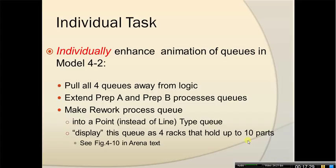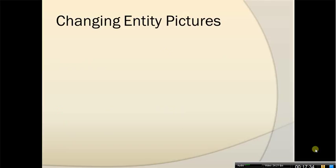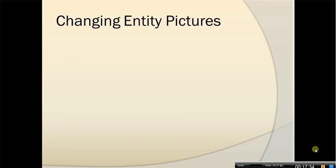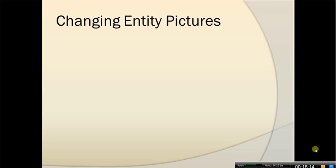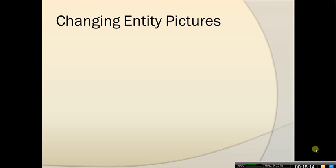The next thing we're going to do is change entity pictures. Different initial pictures can be assigned to different entity types in the Entity data module. You already saw me previously change them to red balls and blue balls for different types of parts — parts A and parts B. We can actually change entity pictures in picture libraries. Picture library files have the extension .plb. You can customize the list, alter pictures, and so on. What we're going to do is go to Edit Entity Pictures to change this list and alter pictures in it.